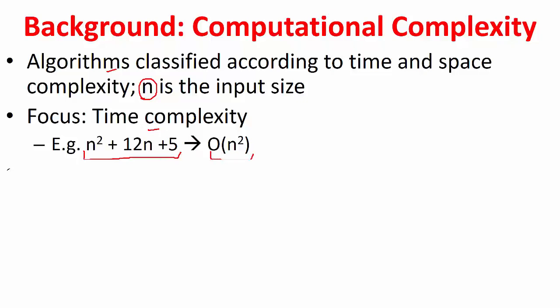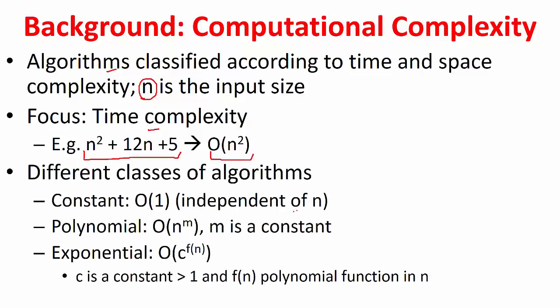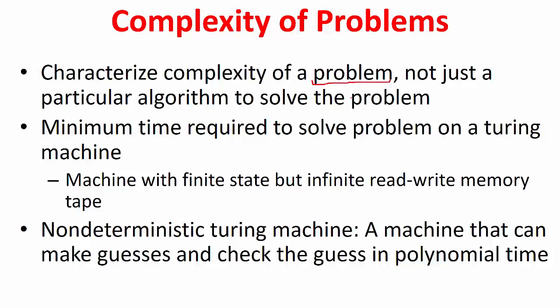There are different classes of algorithms. An algorithm that does a job independent of n takes constant time — we call it O(1). If it takes time n to the power of m where m is a constant, we call it a polynomial time algorithm. If it takes time C raised to the power of a polynomial function of n, we call the algorithm exponentially complex. For a given problem there could be multiple algorithms, each taking different time, but it is useful to characterize the complexity of the problem itself by determining the minimum time it would take to solve it on a Turing machine.